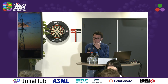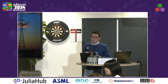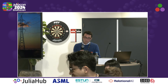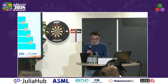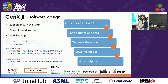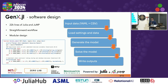Question: Are the optimizers standard Julia packages? Response: Yes, we use JuMP, and whatever solver is supported by JuMP, you can use it. When you run GenX, you pass the optimizer to the function that runs GenX. So you can use Gurobi if you have the license, or HiGHS which is open source, or any of the optimizers supported by JuMP. We are solver agnostic in that sense.